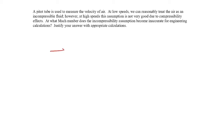The picture we're dealing with here is this: we've got some incoming flow. We'll call the conditions up here V-infinity for velocity, P-infinity for pressure, T-infinity, and rho-infinity — those are pressure, temperature, and density — all the conditions far upstream.